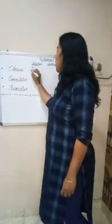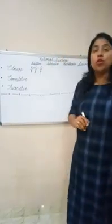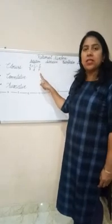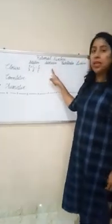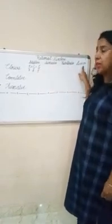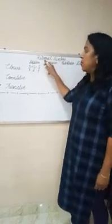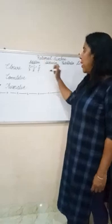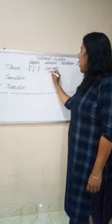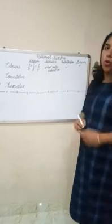This means when two rational numbers are added, the result will also be a rational number. So closure property says: for addition, when two rational numbers are added, the result will also be a rational number. In the same way, when two rational numbers are subtracted, multiplied, or divided, the result will be a rational number. So we can say rational numbers are closed under addition, subtraction, multiplication, and division.